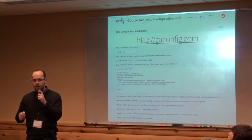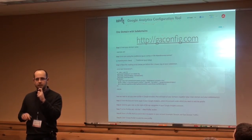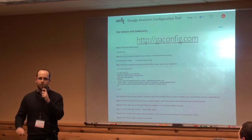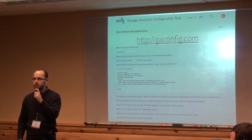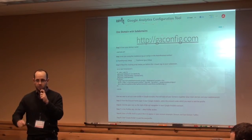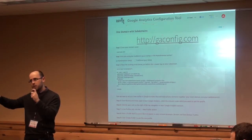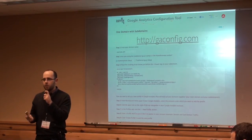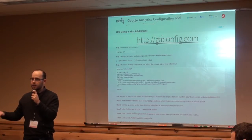So I created GA Config. It's a free tool, and there are 17 different configuration options. Most of them are around events — things like tracking Facebook shares and tweets, doing cross-domain tracking or multiple domains with subdomains. There are a lot of variations, including something simple like tracking 404 pages so you can find out which links are going there.